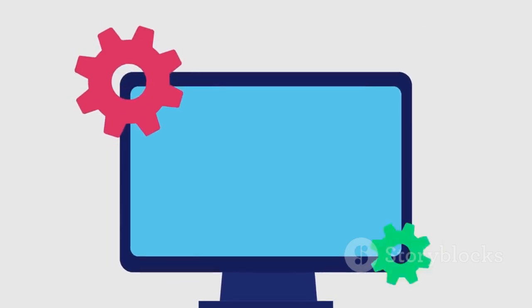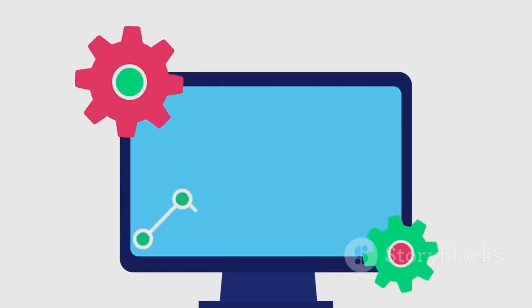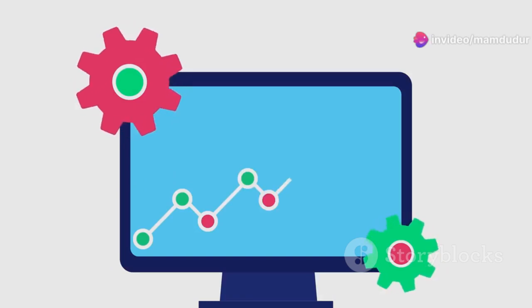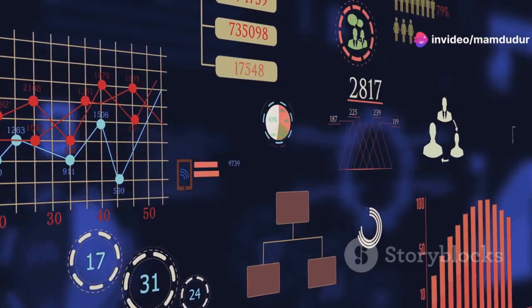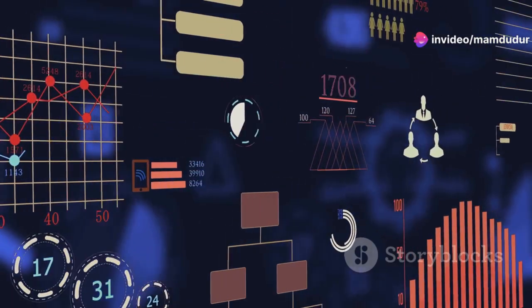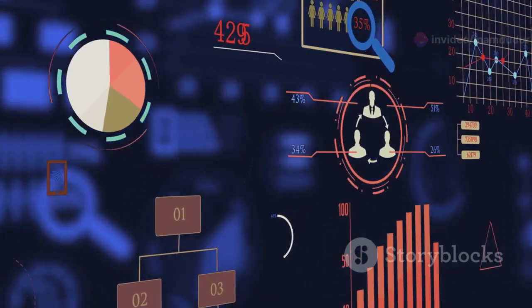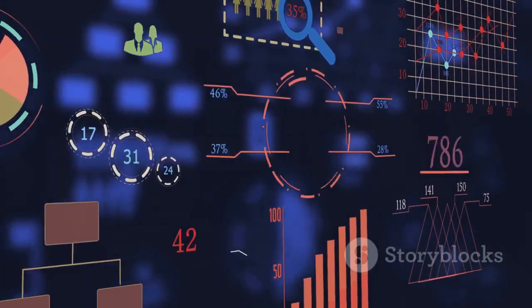By aligning resource allocation decisions with the product life cycle, businesses can maximize their return on investment and achieve sustainable growth. This requires careful analysis of market trends, competitive dynamics, and the product's position within the PLC.